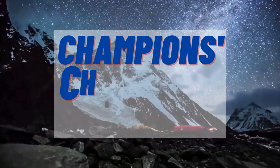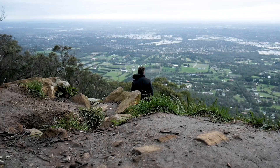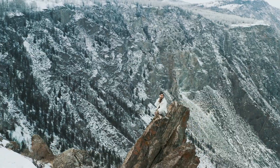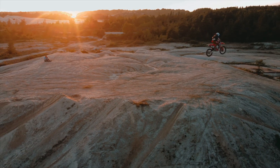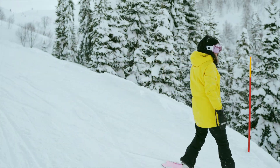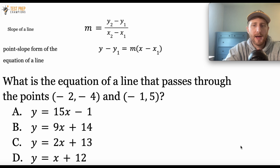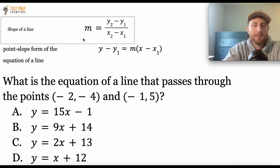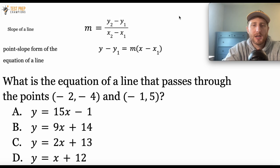In my opinion, the next question is the hardest in the video. If you disagree and think a different question was harder, let me know down below in the comments. So without further ado, let's get into this video's champion's challenge question. What is the equation of a line that passes through the points negative two, negative four, and negative one, five? I've provided the two formulas you'll need — on your test, go to the formula sheet to find them. Pause the video and try it out.